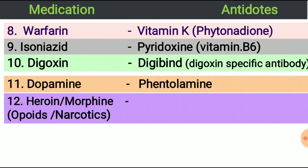Next, narcotics such as heroin, morphine, or other opioids. These narcotic drugs are widely used to relieve pain but also cause euphoria. The antidote for narcotic drugs is naloxone.